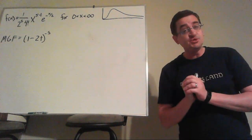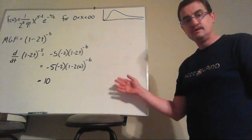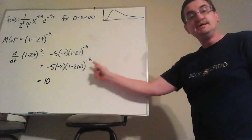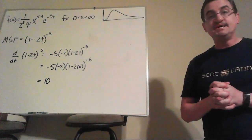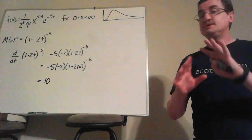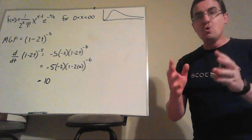But if I told you the MGF was just 1 minus 2t to the negative 5th, suddenly it's not nearly so intimidating to try to find the expected value of x. By taking the derivative of that, setting t equal to zero, and my expected value of x is 10.